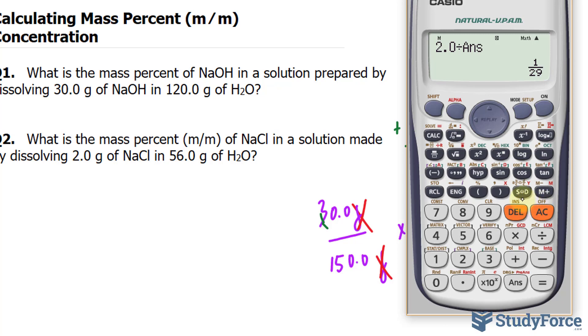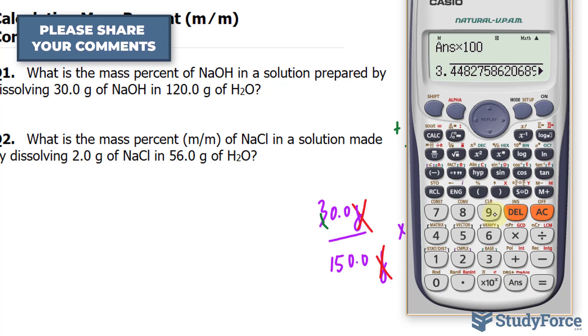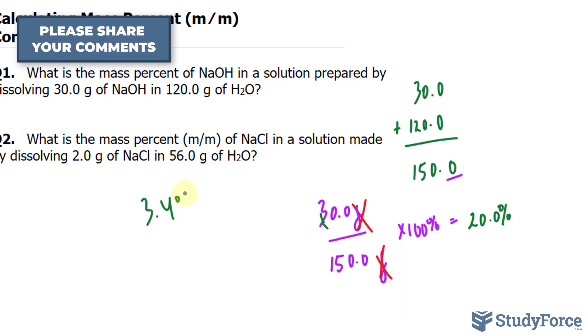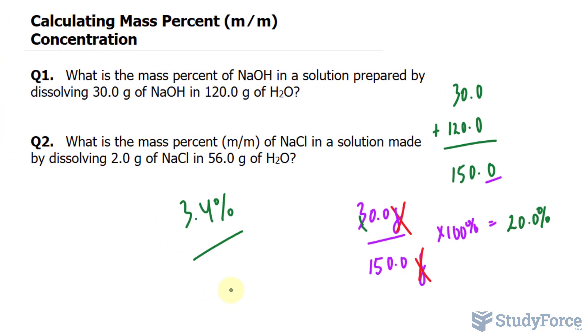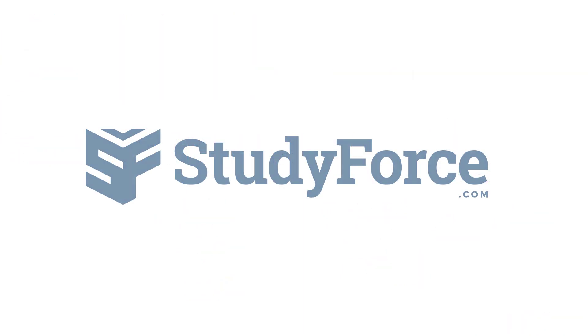We want this to two significant figures, so we'll multiply this decimal number by 100, and we get 3.4%. And there you have it. That is how to calculate mass percent concentration.